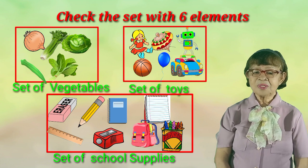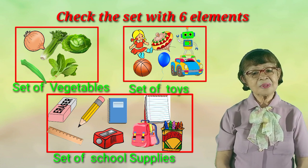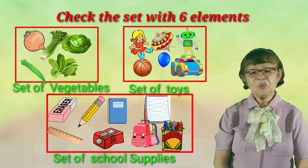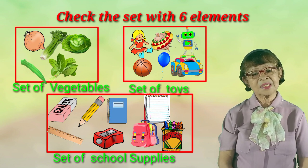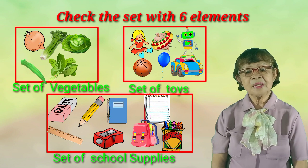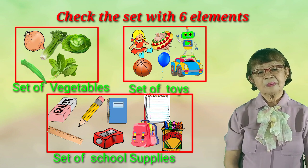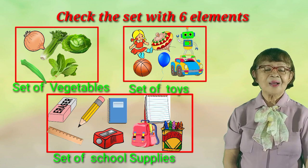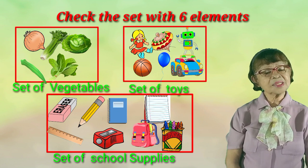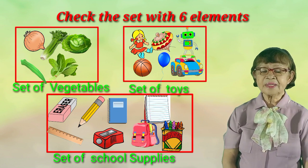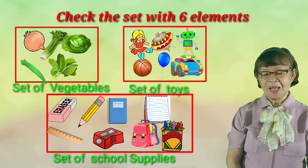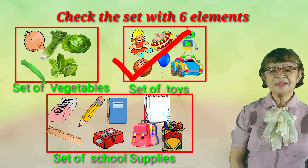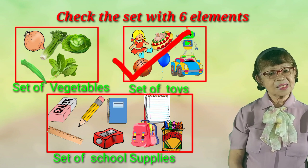Now we go to the set of toys. We have a doll, top, robot, ball, balloon, and toy car. Now we go to the set of school supplies. We have eraser, pencil, paper, notebook, bag, sharpener, ruler, and crayon. We are going to check the sets with 6 elements, and we found out that the set of toys have 6 elements. So we are going to check the set of toys because it has 6 elements.